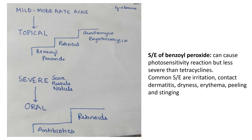In Step 2 CK, the important thing is to know about the treatment. This chart will help you answer all the important questions. For mild and moderate acne, we give topical treatment. For topical treatment, the first line is benzoyl peroxide, then retinoids, and then antibiotics.